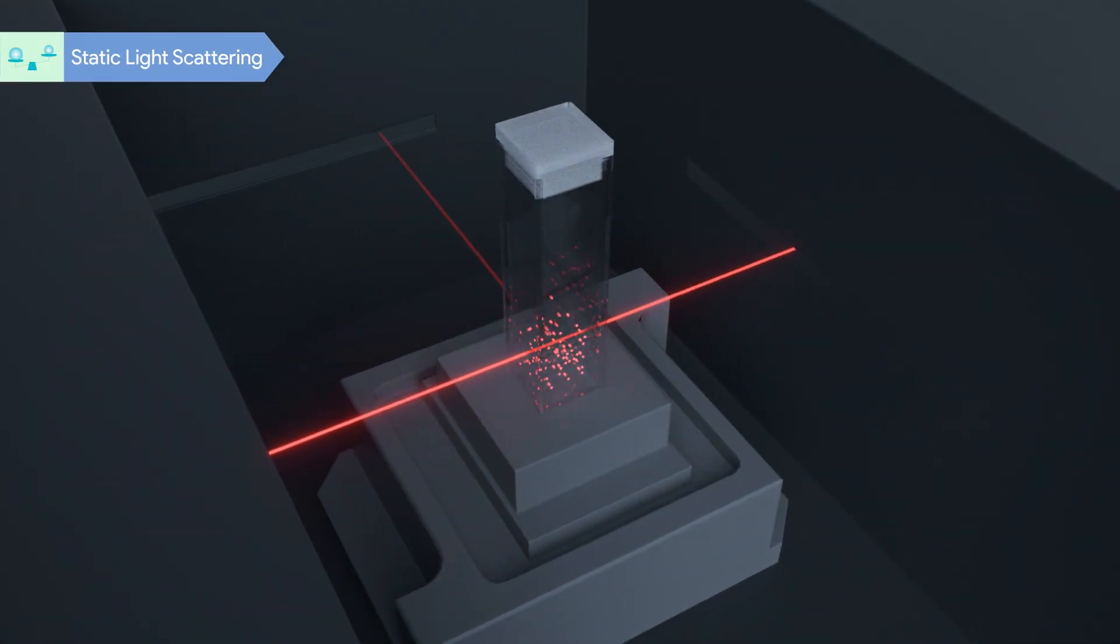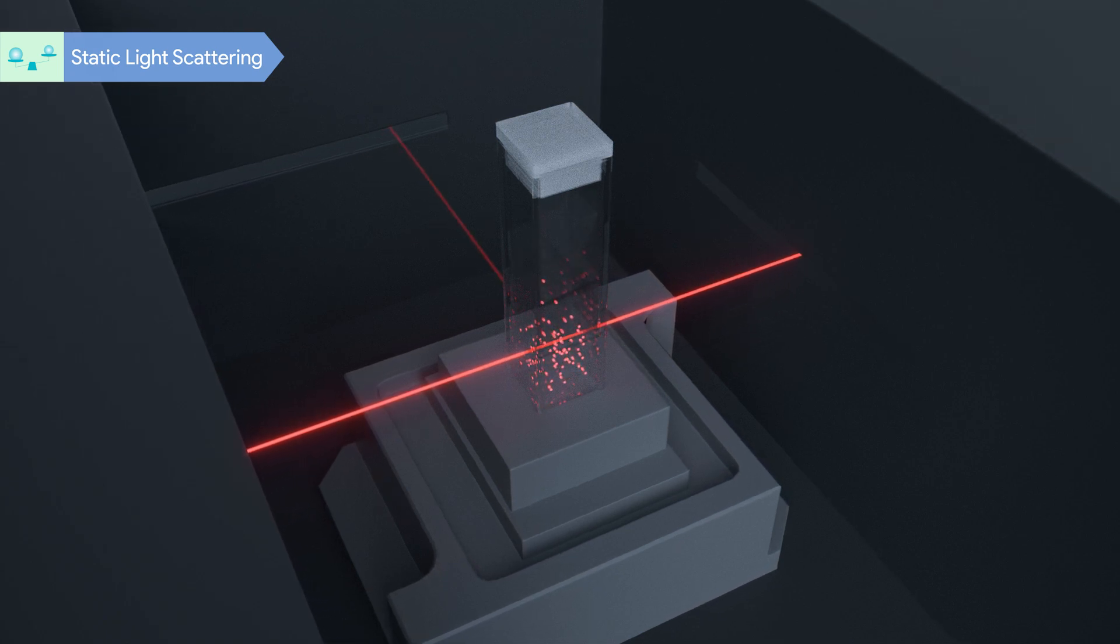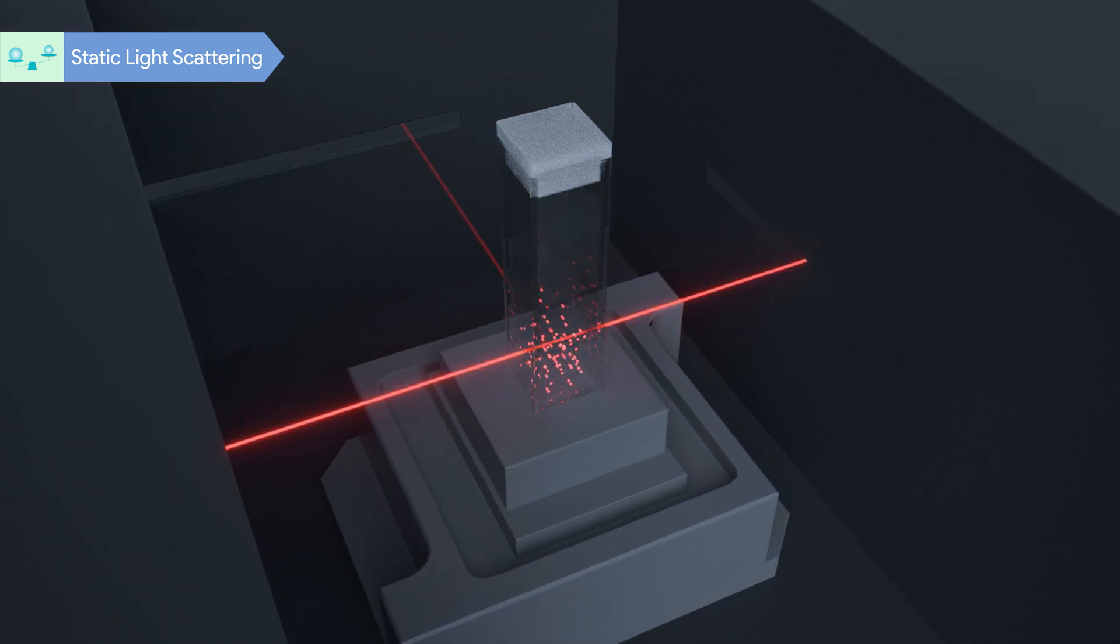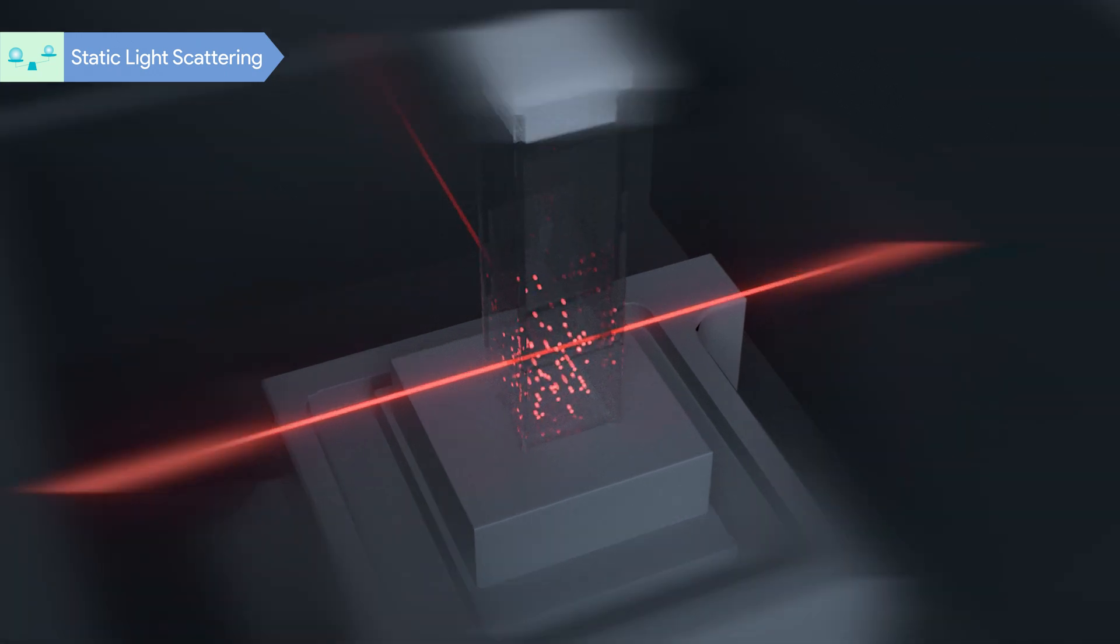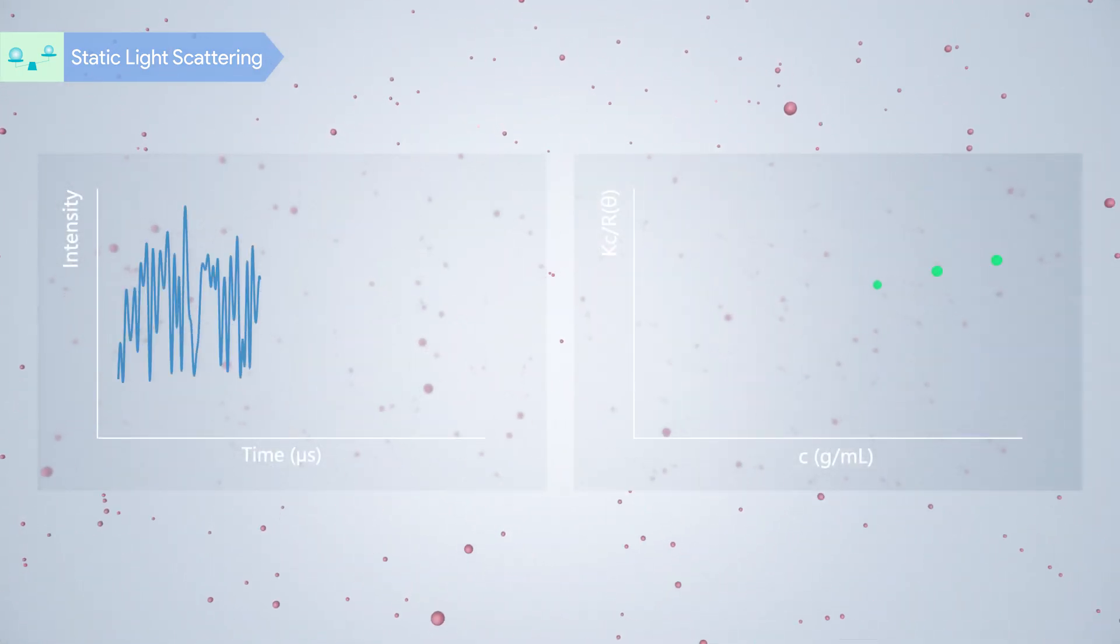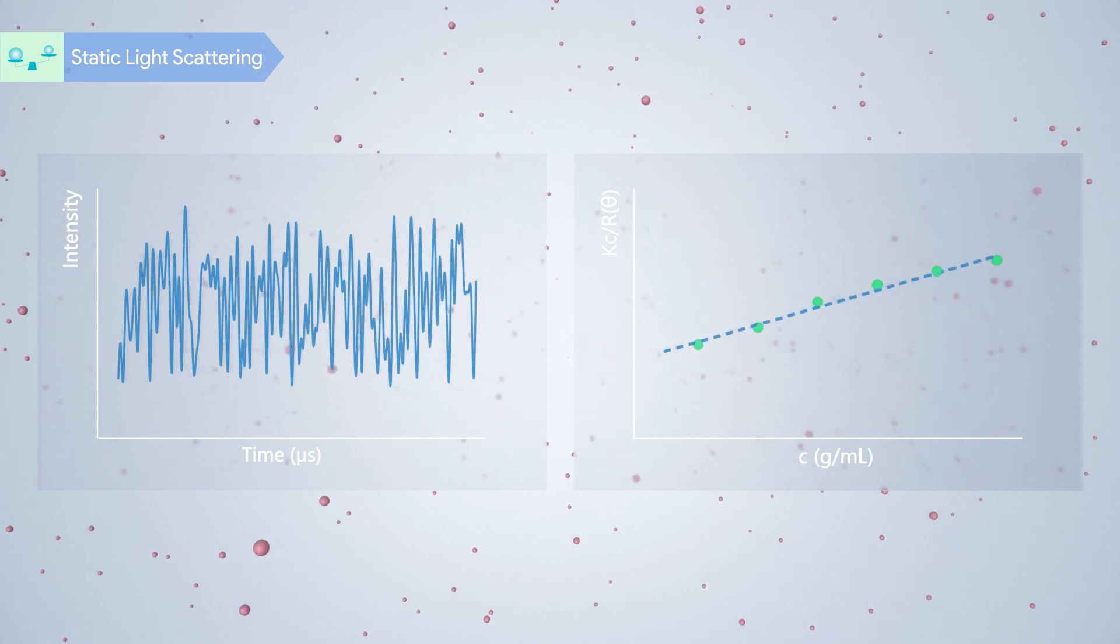SLS measures the molecular weight by detecting the scattered light intensity of a series of sample solutions with different concentrations. By W plot, the average molecular weight and the second virial coefficient can be calculated.